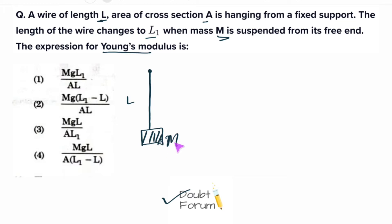When this mass is suspended it will create a force on this length of the wire. So due to the force created by this mass M, the length changes to L₁. After this mass M is suspended from the free end of this wire, the length has become L₁.